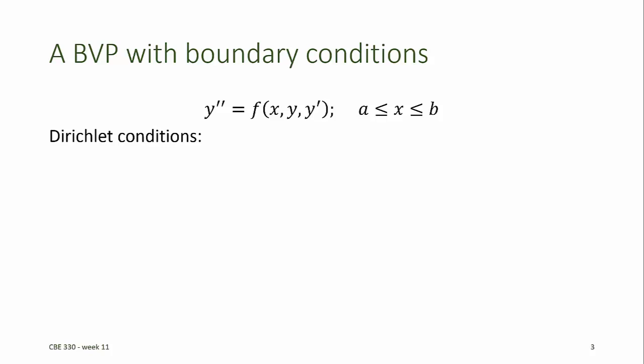Now, there are various ways in which the boundary conditions can be defined. Assume we have a boundary value problem that's a second-order ODE in the independent variable X for the dependent variable Y, and we want to know the solution between the points A and B in the domain. This cannot be a first-order ODE if we want to define a boundary value problem, because a first-order ODE can be solved with only one known condition. For boundary value problems, the order of the ODE must be two or higher, or we must have at least two dependent variables.